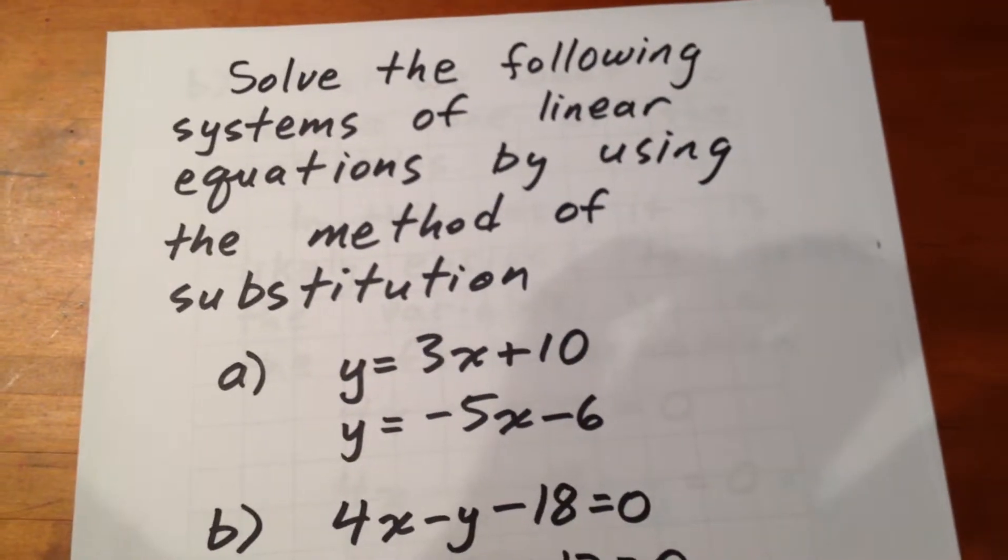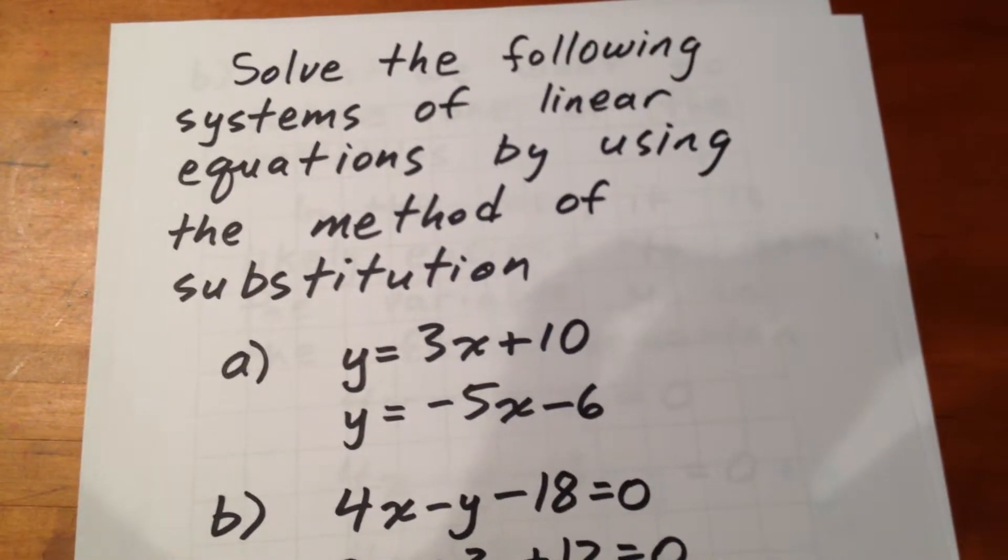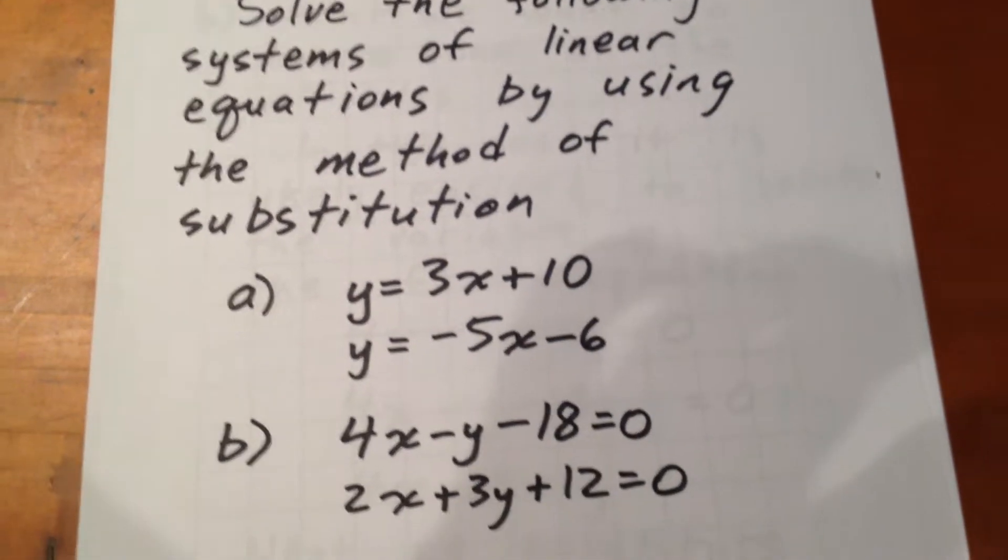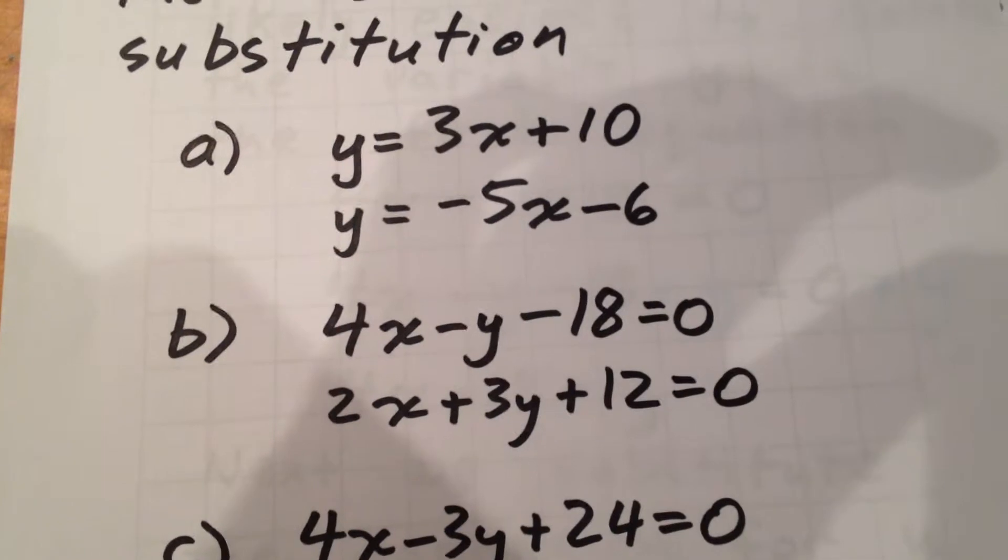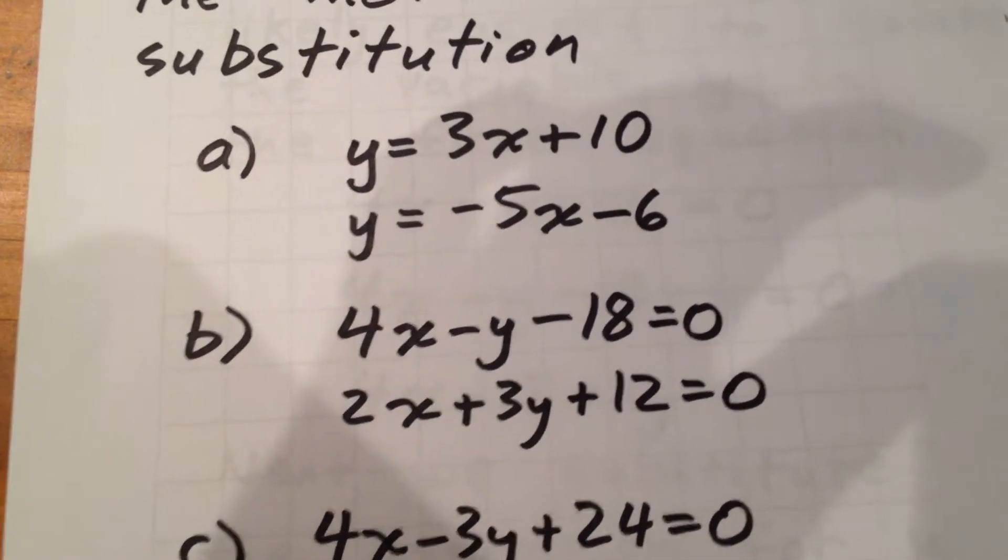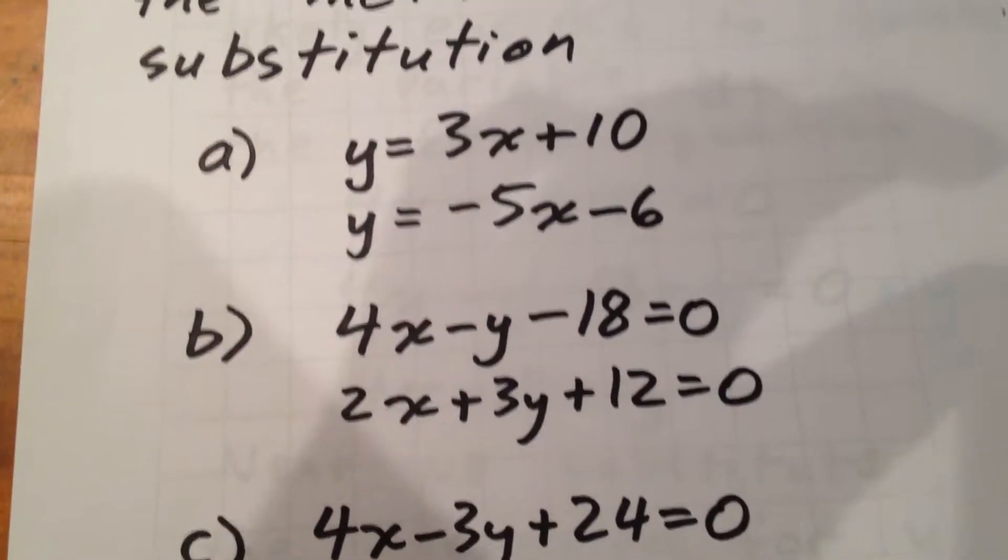We want to solve the following systems of linear equations by using the method of substitution. We're going to focus on the second question here: 4x minus y minus 18 equals 0 and 2x plus 3y plus 12 equals 0.